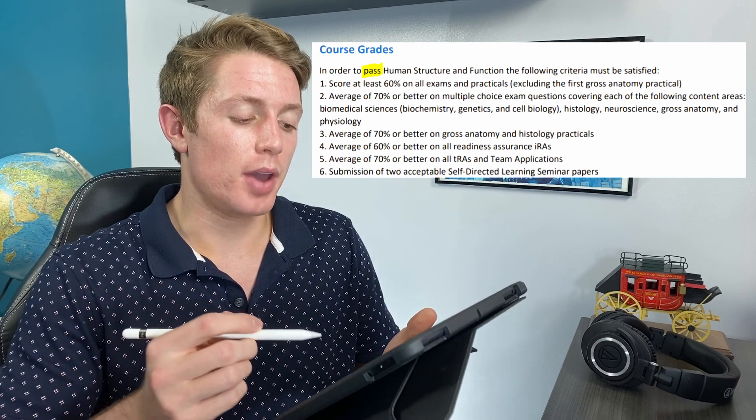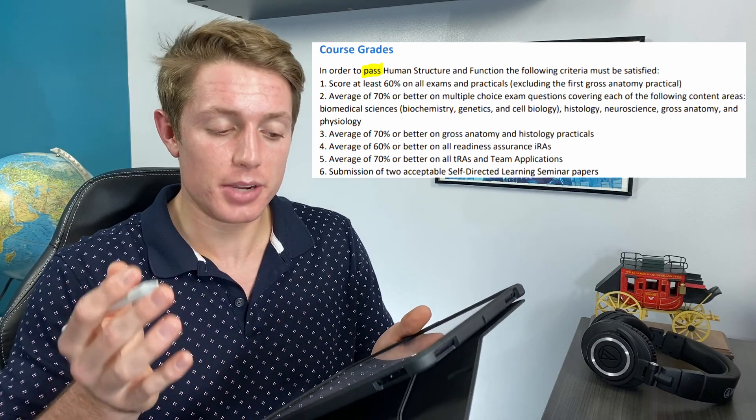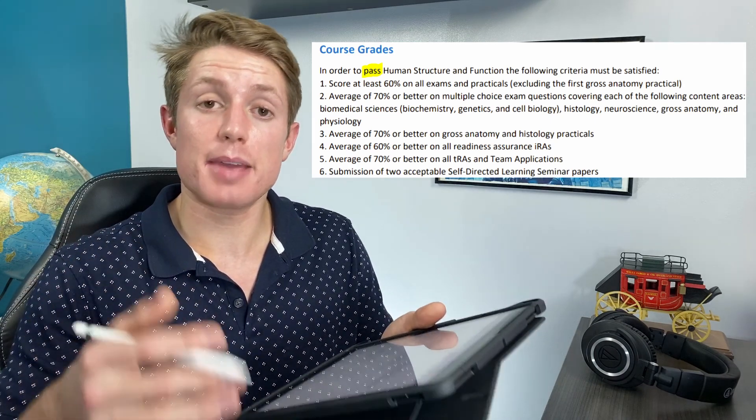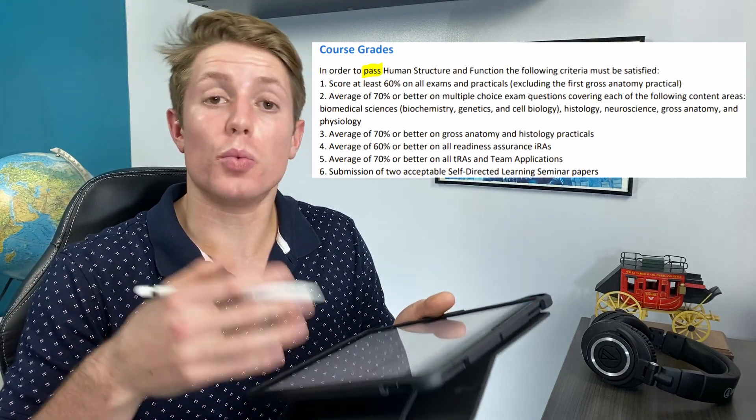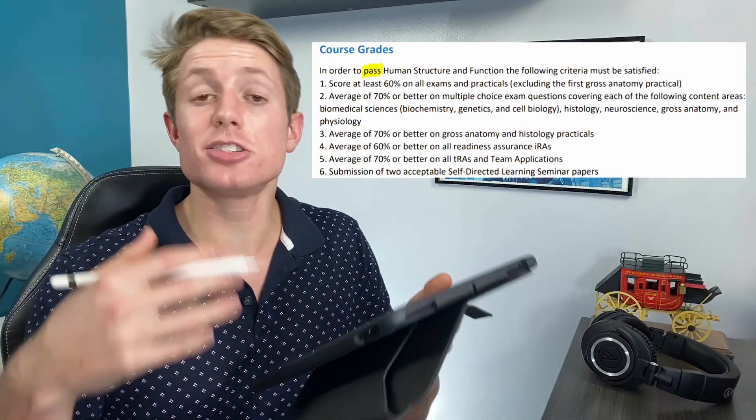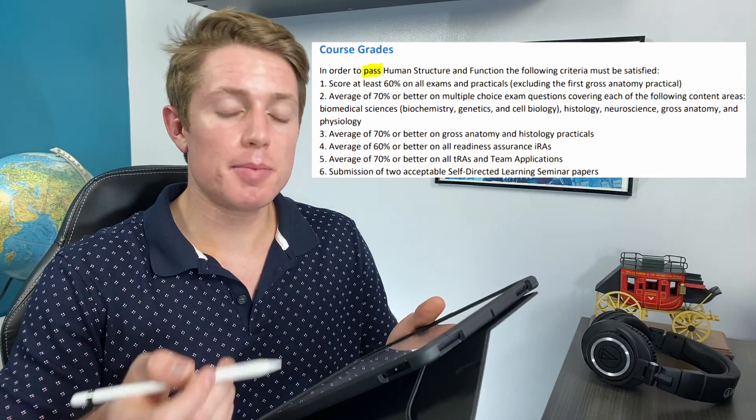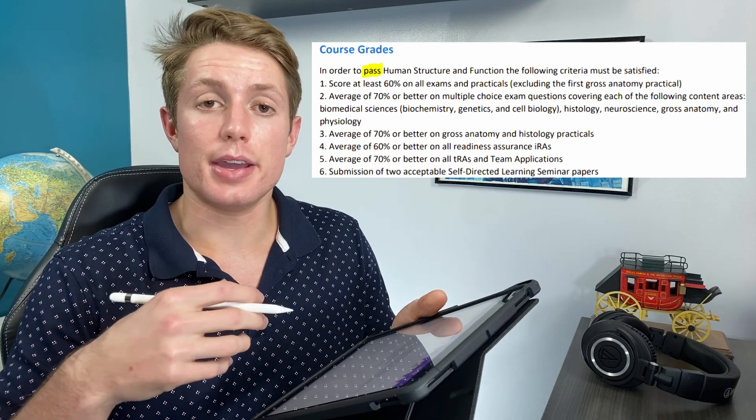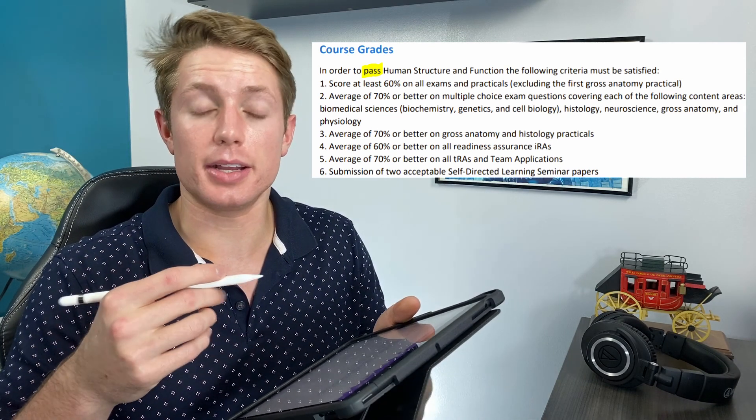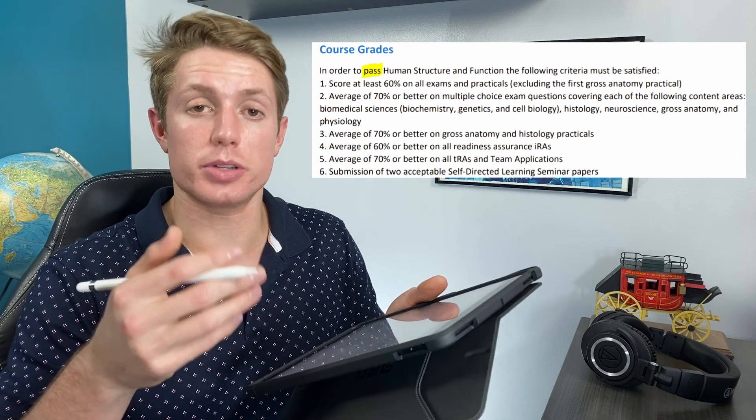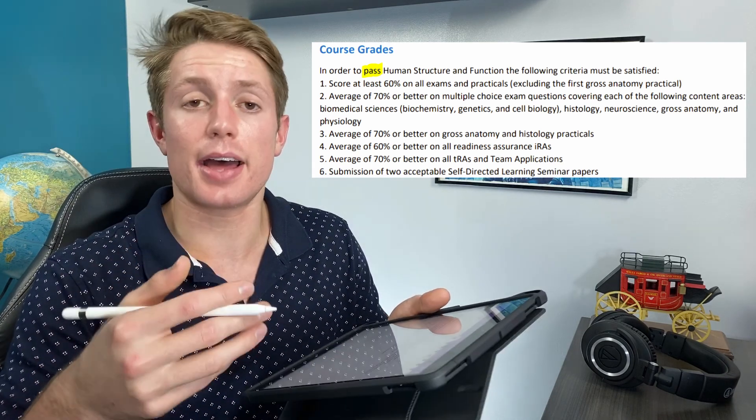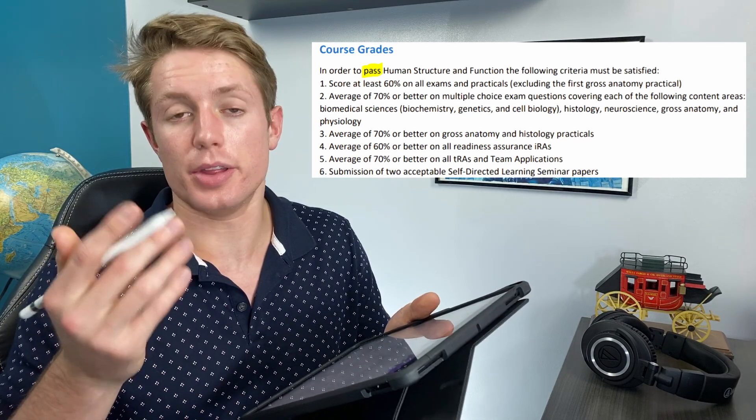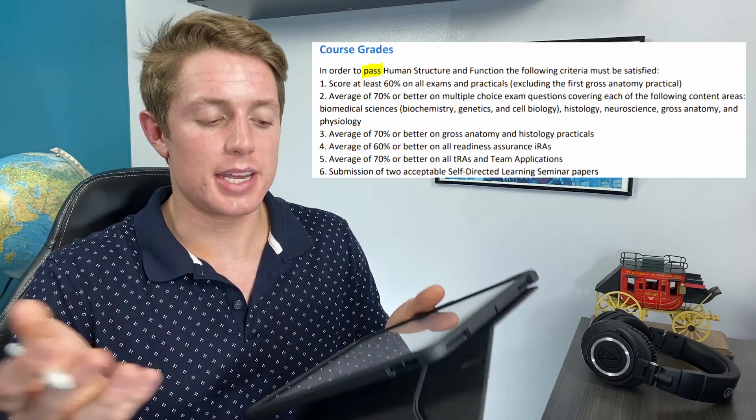And then immediately after that you have number five, which is a TRA or team application. And that's where you take the same exam that you took in your IRA, again, with a group of like six people. And so that's the TRA. And then the team application is, as part of the learning, you sort of do an apply your knowledge type thing where they might give you a patient and you have to figure out what's going on based on what you learned that night before or that day before in preparation for this TRA, IRA, and team application.